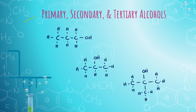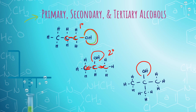When deciding which kind of alcohol we have, we find our hydroxyl group and look at the carbon that is attached to it. If there is only one carbon bound to the carbon that is bound to the hydroxyl group, it's a primary alcohol. Here, this carbon is bound to two carbons — that makes it a secondary alcohol. This hydroxyl group is bound to a carbon that is bound to one, two, three carbons — that makes it a tertiary alcohol.